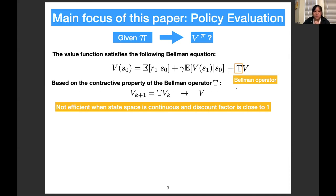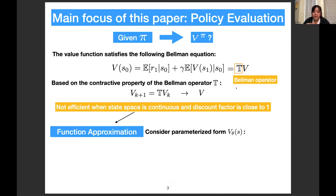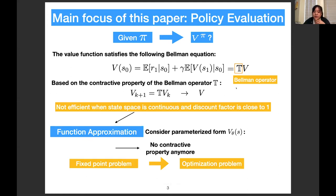However, this is not efficient when the state space is continuous or the discount factor is close to one. In this situation, people usually use function approximation. Unfortunately, with function approximation, the Bellman operator loses its contractive property. One way to solve the value function in this situation is to transfer the fixed-point problem to an optimization problem — basically finding theta such that the value function satisfies the Bellman equation.